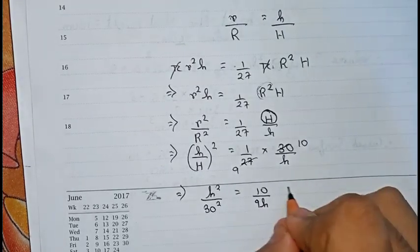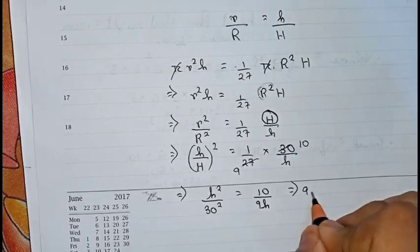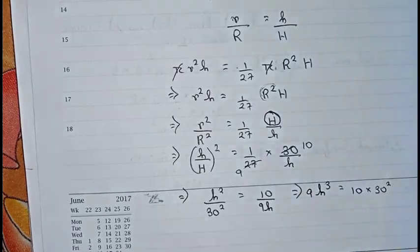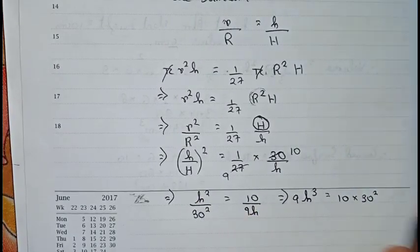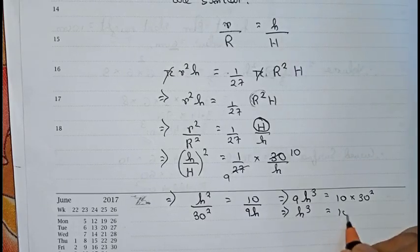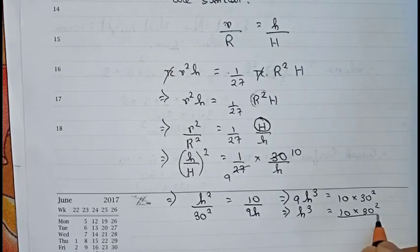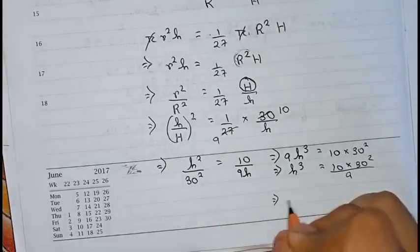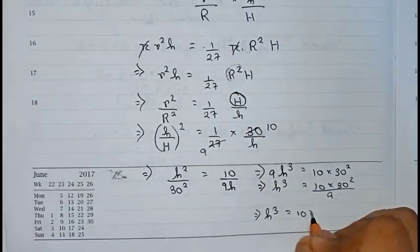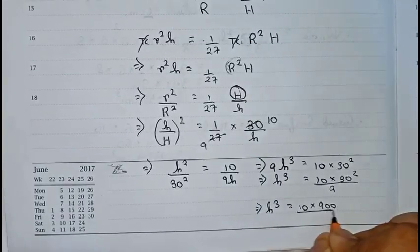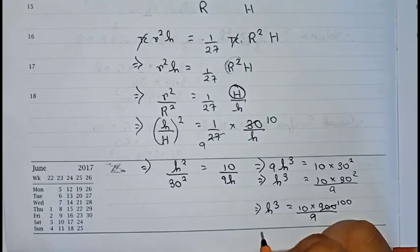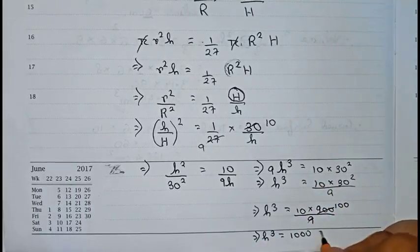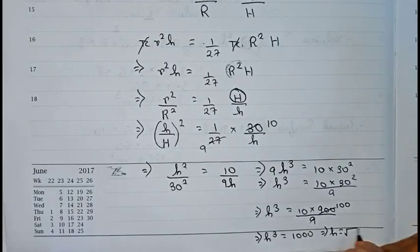So 9h³ = 10 × 30² = 10 × 900 = 9000. Dividing both sides by 9, h³ = 1000. Taking the cube root of both sides, h = cube root of 1000 = 10 centimeters.